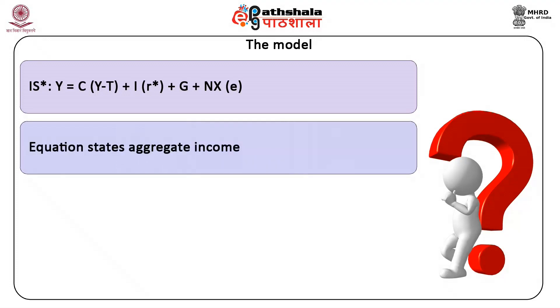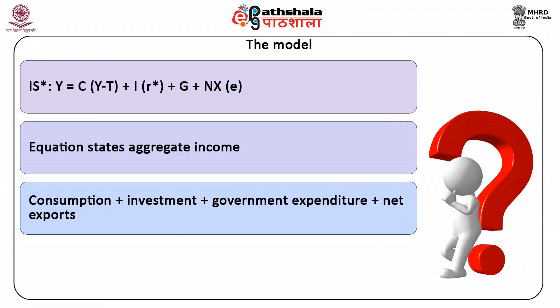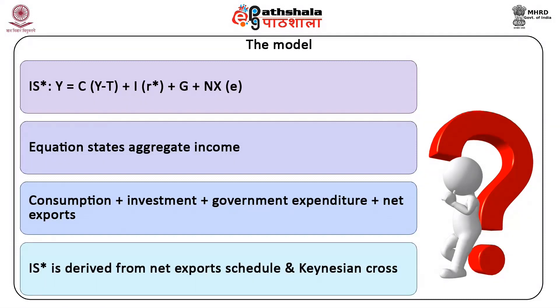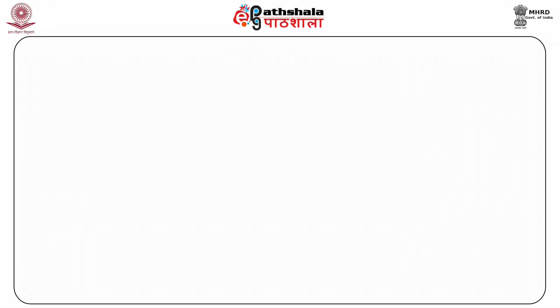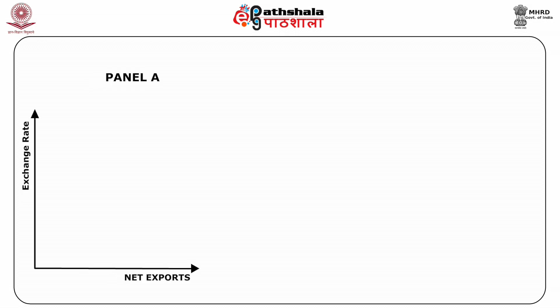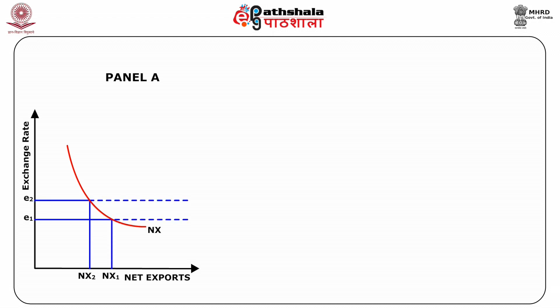This equation states that aggregate income is the sum of consumption, investment, government spending, and net exports. The IS star is derived from the net export schedule and the Keynesian cross. Now we will see how the IS star curve is derived. Consider panel A, which shows the net export schedule — a downward sloping curve showing the relationship between net exports and the exchange rate in the economy.